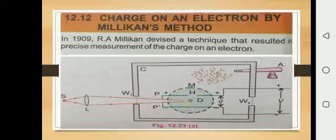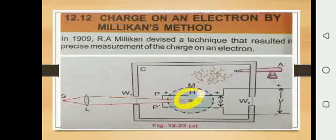When the oil droplets become negatively charged, after some time the potential difference is switched off. Now the charged droplets, which were charged by X-rays, have negative charge. With no electric force, they are no longer balanced. Under the action of gravity only, they move in the downward direction and experience a drag force.